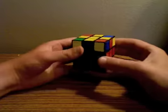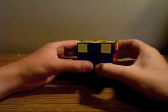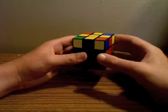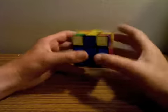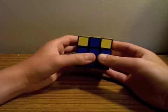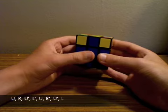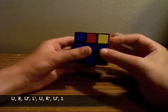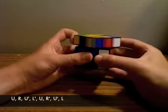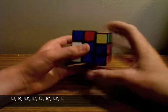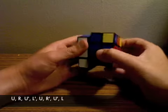What you would do is either pick a solved corner or a corner that is in the right place but not flipped the right way. Hold the cube so that corner is in the top right corner. Then do the algorithm: U, R, U', L', U, R', U', L.